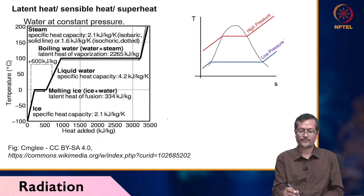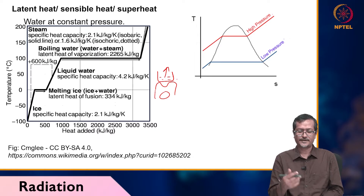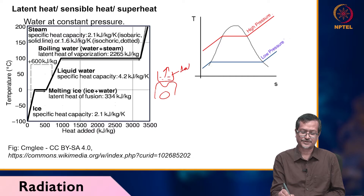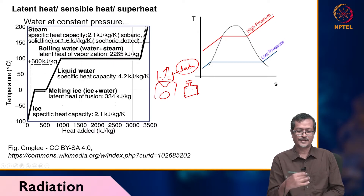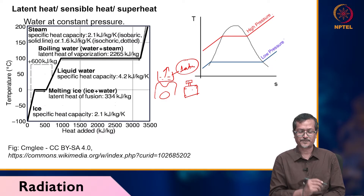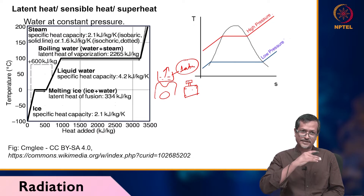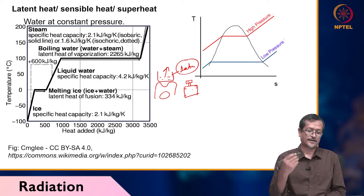If you take water at constant pressure in one open vessel and heat it, initially no steam comes out and you cannot see any steam. After a certain time, bubbles form and lots of steam comes out — you are boiling at one atmospheric pressure. Initially you give heat, the temperature increases from say 20 degrees up to 100 degrees centigrade. That temperature change is called sensible heat.